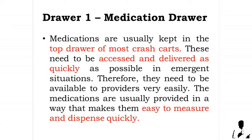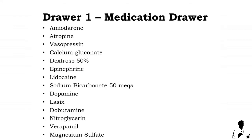The common set of first-drawer medications are the following: amiodarone, atropine, vasopressin, calcium gluconate, dextrose 50%, epinephrine, lidocaine, sodium bicarbonate 50%, dopamine, Lasix, dobutamine, nitroglycerin, verapamil, and magnesium sulfate. A drug study of these medications is provided in your module; a reference link will be provided in the description box.